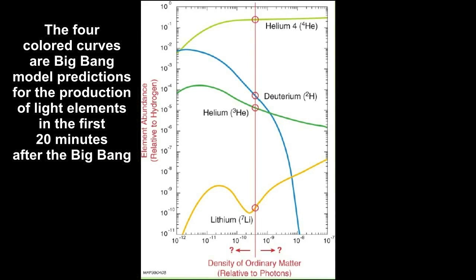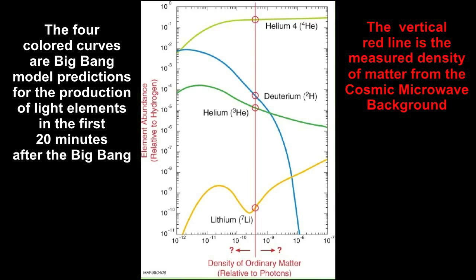The colored lines in the plot represent the most abundant light elements produced within 20 minutes from the big bang. The y-axis represents the relative abundance with respect to hydrogen of each element. The x-axis represents the density of matter. From cosmic microwave background observations, we know what the density of matter should be.